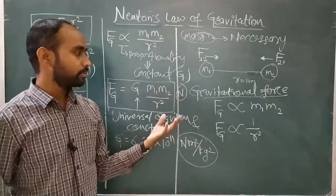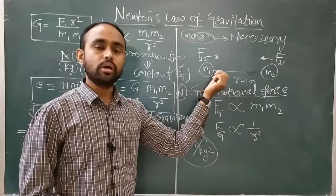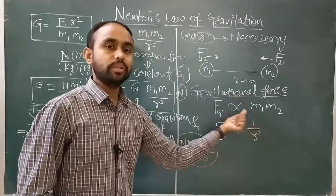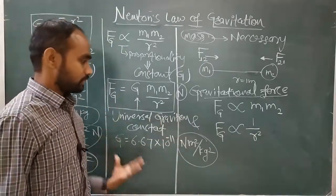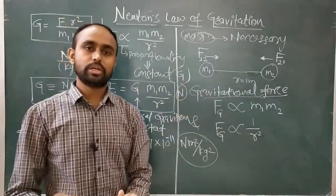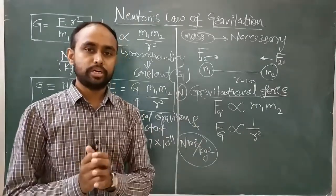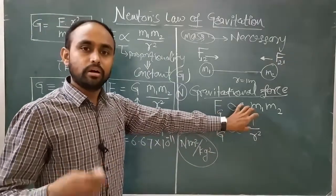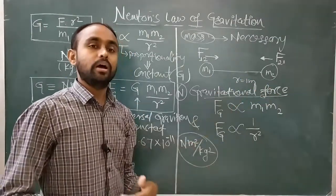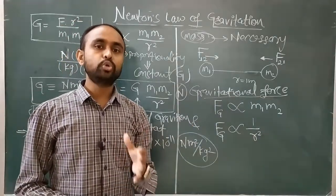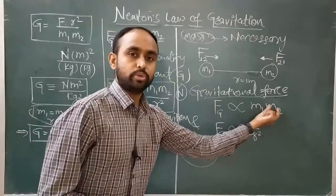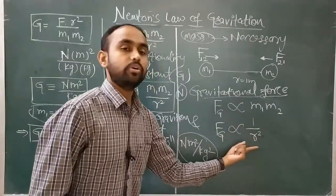The statement of Newton's law of gravitation in words: any two masses attract each other with a force which is directly proportional to the product of their masses and inversely proportional to the square of distance between them. This is the statement of Newton's law of gravitation.